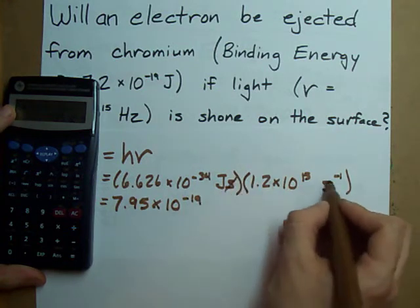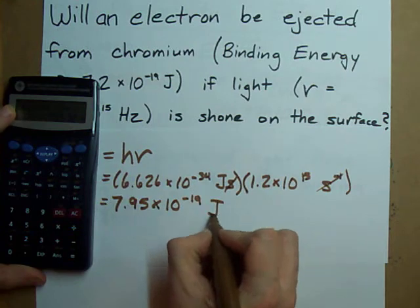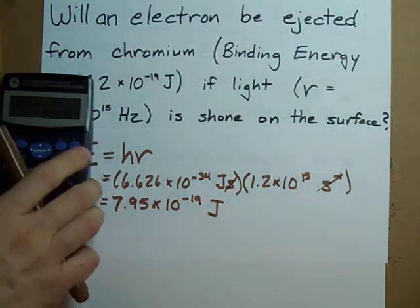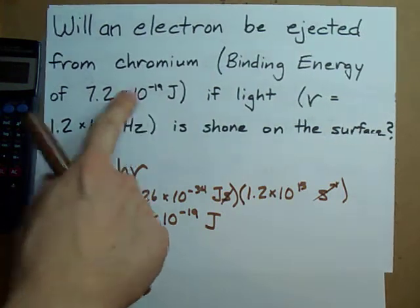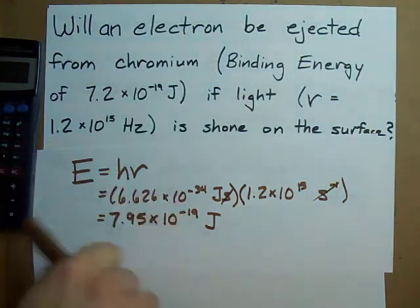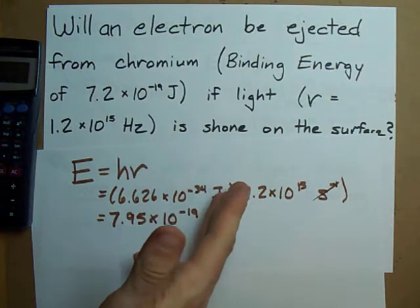And I want to take a look at my units. The units are joules. So, is this more energy than the binding energy? Yes. That means electrons are ejected. And it's as easy as that.